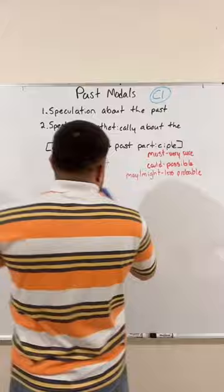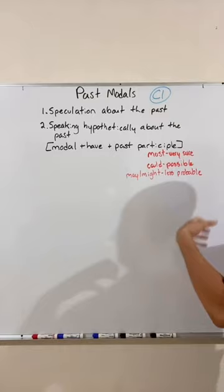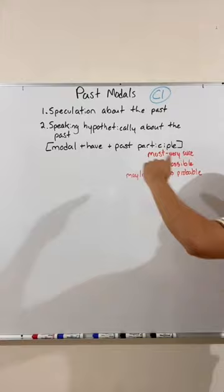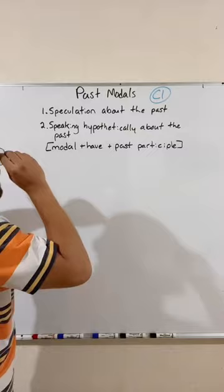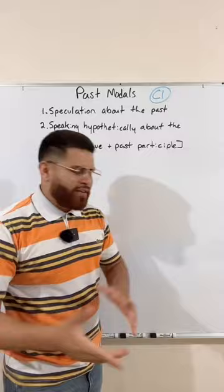Remember these modals: must, could, may, might — we use these to speculate. We use 'must' when we are very sure, 'could' to express a possibility, and 'may' and 'might' to express a possibility that is less probable — less likely to happen. For speaking hypothetically about the past, we use some different modals.